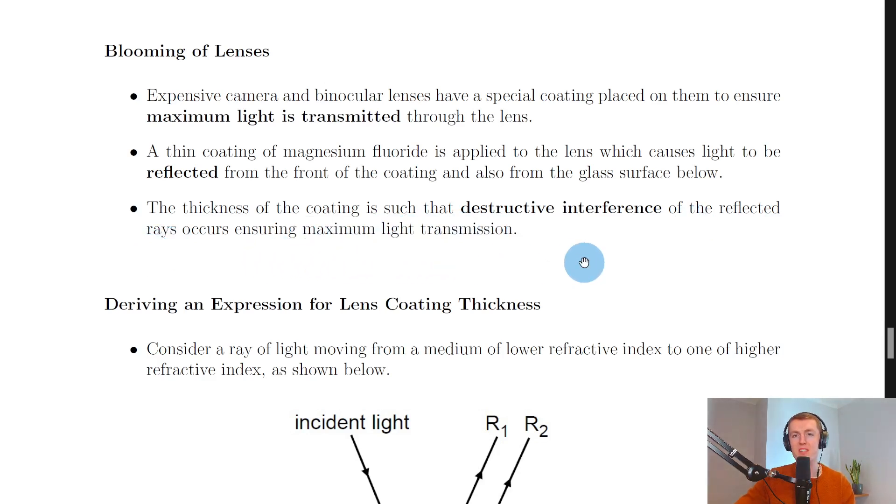And this is why blooming of lenses is also known as anti-reflective coatings, because these coatings are going to cause a certain wavelength or frequency of light, i.e. color of light, to not be reflected when it hits the lens surface. So it's anti-reflective. And this will ensure maximum light transmission.